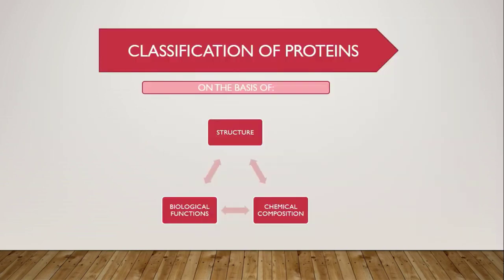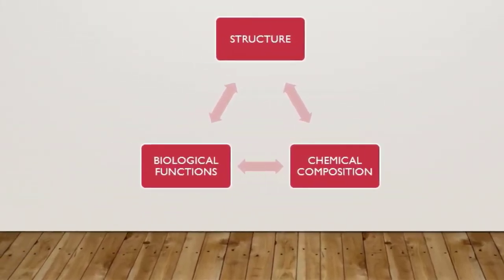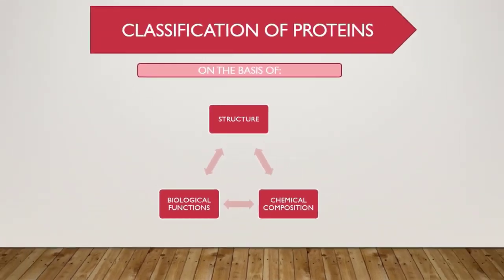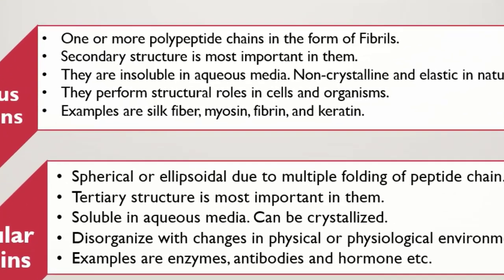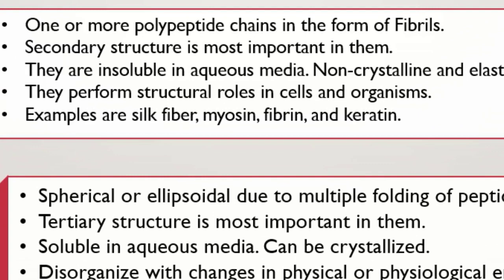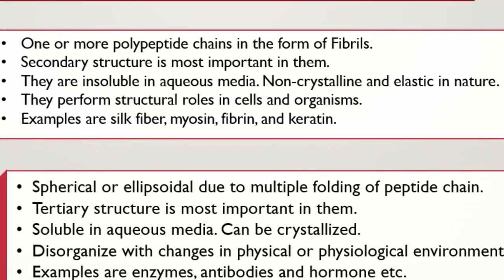Next ہم دیکھتے ہیں classification of proteins. Proteins کو تین basis پر classify کیا جاتا ہے: on the basis of their structure, chemical composition, and biological functions. سب سے پہلے classification of proteins on the basis of their structure. Structure کی base پر proteins یا تو fibrous ہوتی ہیں یا globular. Fibrous proteins کے اندر ایک یا ایک سے زیادہ polypeptide chains ہوتی ہیں thread-like structures کی form میں. Fibrous proteins are insoluble in aqueous media، یہ non-crystalline ہوتی ہیں اور elastic in nature ہوتی ہیں.